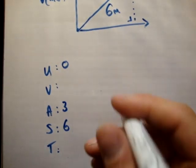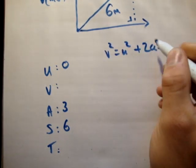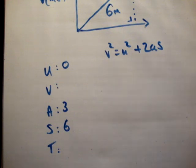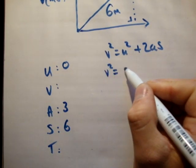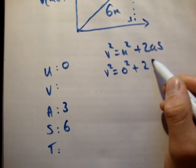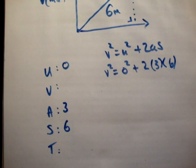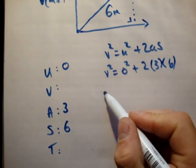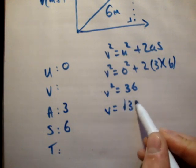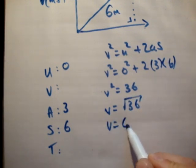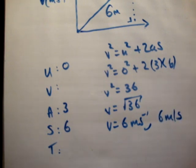v squared equals u squared plus 2as. The only variable we don't know is v, so that's perfect. v squared equals 0 squared plus 2 times 3 times 6. 3 sixes are 18, 3 eighteens are 36. v squared equals 36, v equals the square root of 36, v equals 6 meters per second.